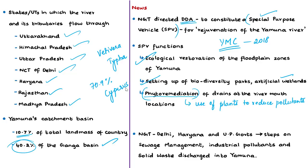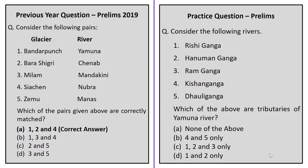Apart from wastewater treatment, phytoremediation also provides ecological benefits, increases green area, reduces carbon footprint, and is aesthetically pleasing. The SPV will also carry out ecological services by removing encroachments and developing the riverfront. NGT also directed the governments of Delhi, Haryana, and Uttar Pradesh to take expeditious action on sewage treatment, industrial pollutants, and solid wastes discharged into the river, giving DDA two weeks to act.